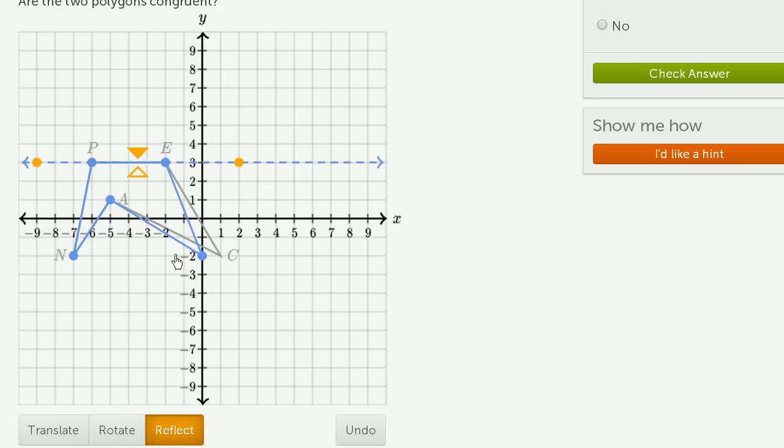So these two polygons are not congruent. And this is why it's important to do this, to make sure that the rotations work out.